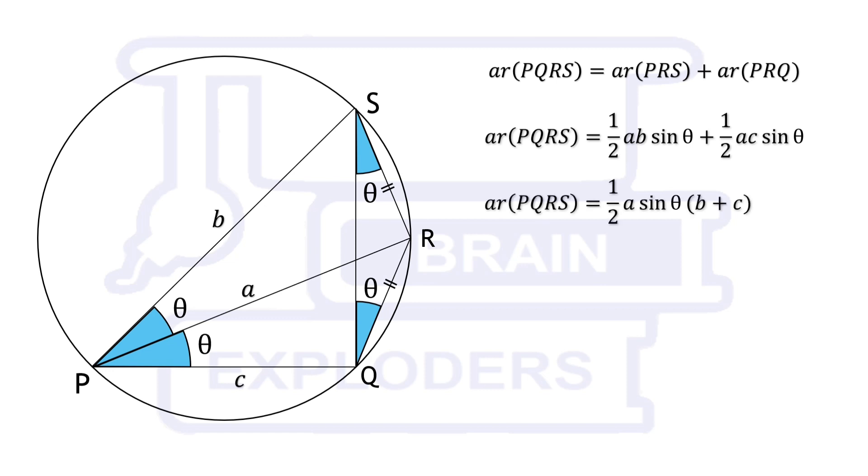We can take half a sin theta as common. Now put the value of a in terms of b, c and cos theta. We get area of triangle PQRS equals to 1 over 4 times (b plus c) whole squared times tan theta.